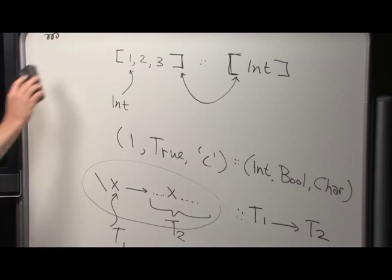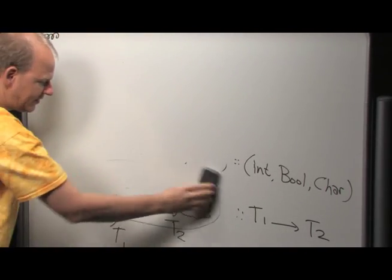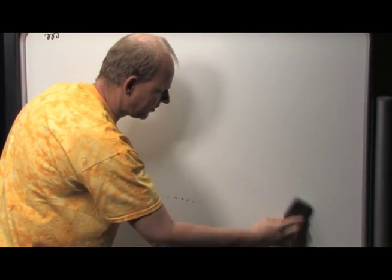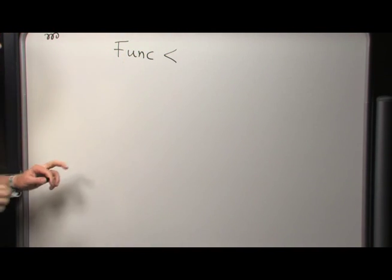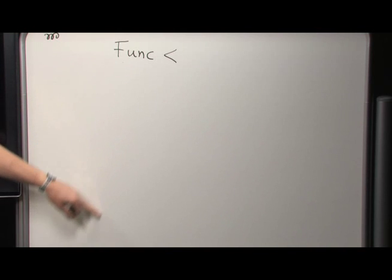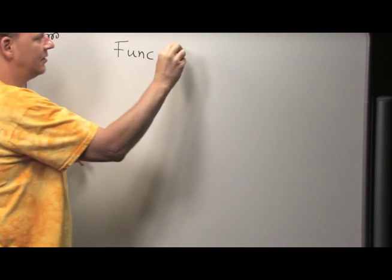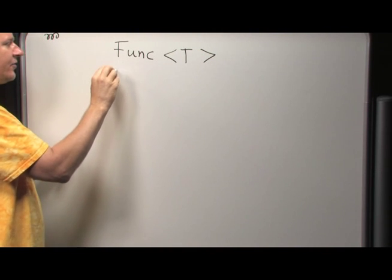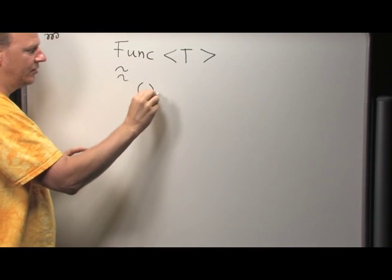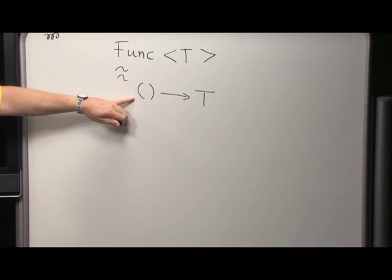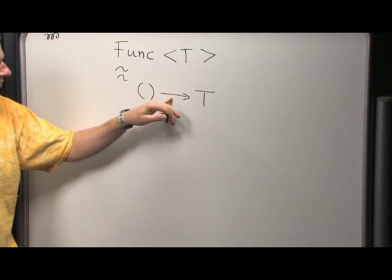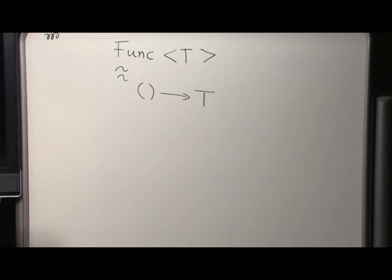Let's look at how this function type corresponds to C#. In C# we have a family of function types. `Func<T>` in C# corresponds roughly to `() -> T` in Haskell (unit arrow T), and `Func<S,T>` corresponds to `S -> T`. We'll need to wait until we talk about monads to see the full picture.